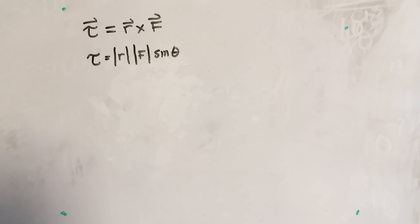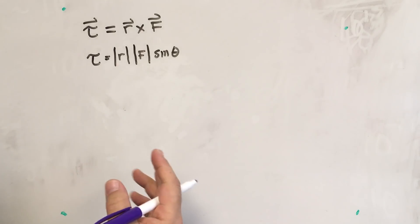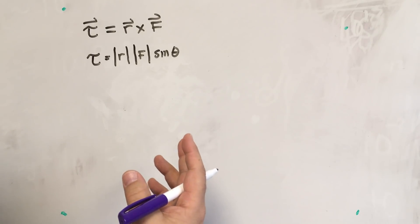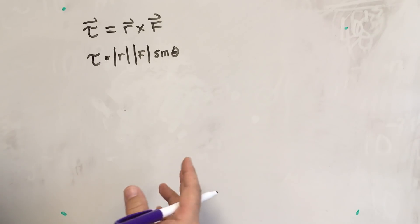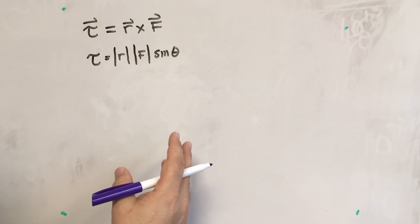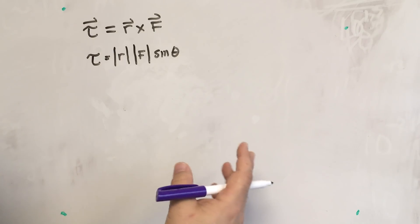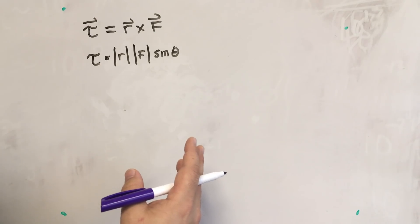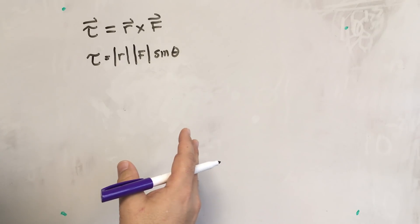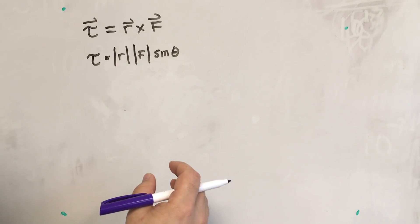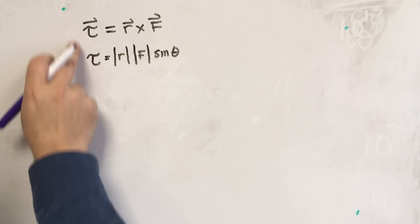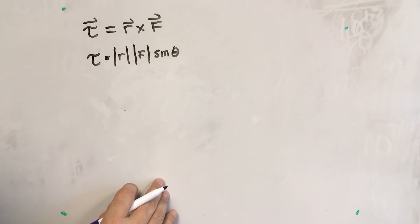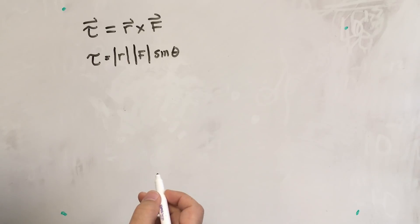One thing we learned early on when studying vectors is that vectors have a magnitude and a direction, but when we first started adding and subtracting them, we learned we could grab them and move them around arbitrarily to use them together to calculate quantities. I want to return to that idea and use it to talk about the right-hand rule and the magnitude. Let's start with a system example and talk about how we're going to manipulate the vectors.